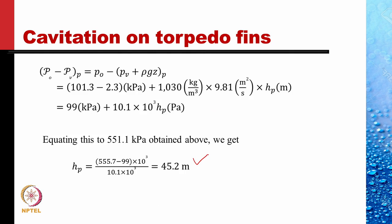So, if the torpedo has to operate at a much larger speed, it must move deeper — 45.2 meters instead of 10 meters — to avoid cavitation. I hope this example clarifies the use of modeling rules in cases where cavitation is involved.